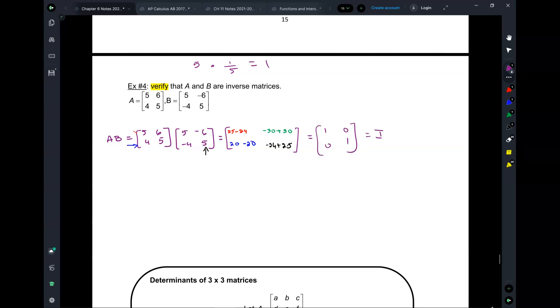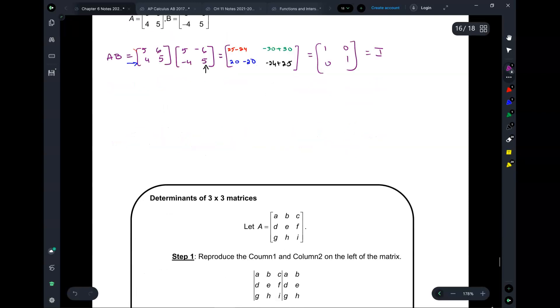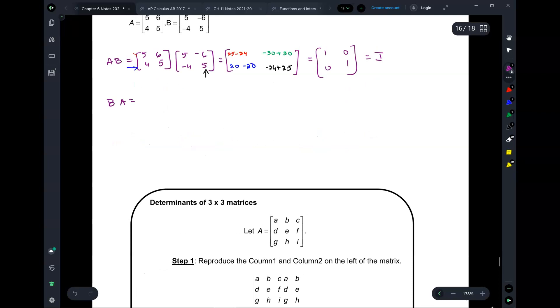But are we done? We're not done. Now we got to do B times A. Remember how this whole time I kept telling you A times B is not the same as B times A? Well, here we're doing A times B, and now we're going to do B times A and see what we get.